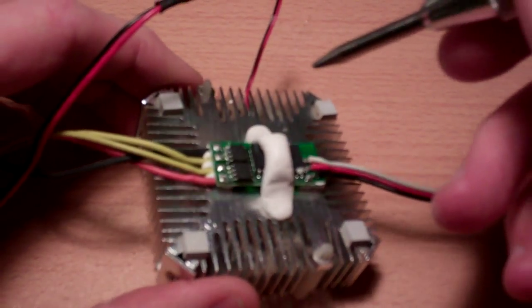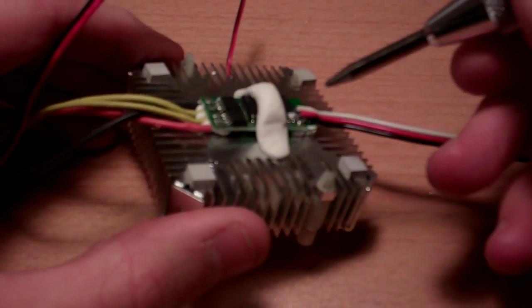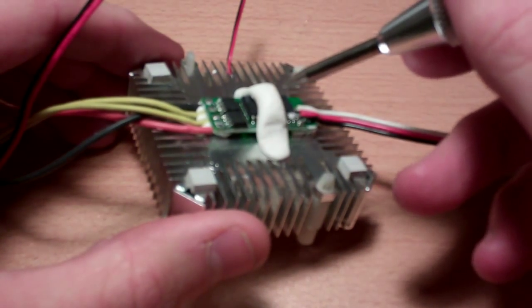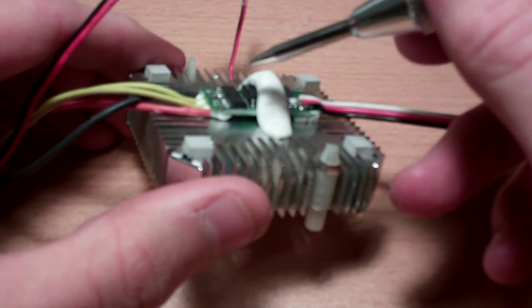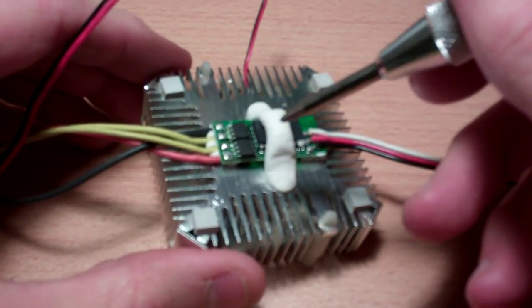You actually don't have to do this, I don't think, on all ESCs because there are some ESCs that come with a metal plate that goes against the MOSFETs and acts as a little heatsink.